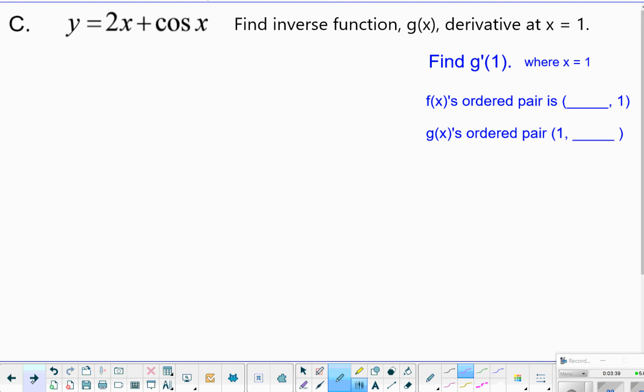The next one, it says y equals 2x plus cosine x. Find the inverse function, g of x, the derivative at x equals 1. So I want to find g prime of 1, which would be like finding 1 over f prime of g of 1. Alright, so we need to get f prime of x would be 2 minus sine of x. It's taking the derivative of the original. I need to evaluate that at some value. And that value is at g of 1. What is g of 1? Well, I don't have the inverse function to just put 1 into that inverse function.